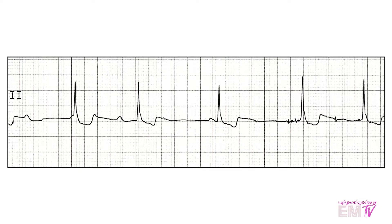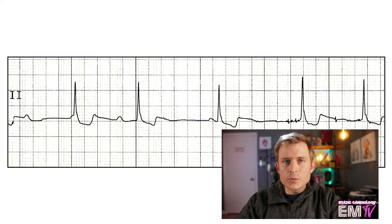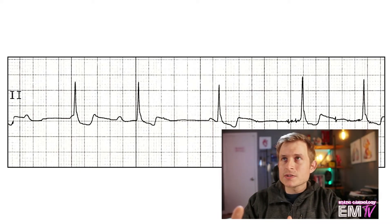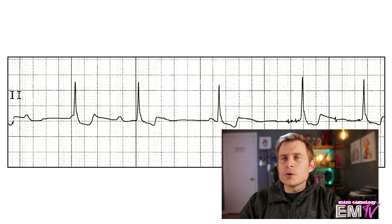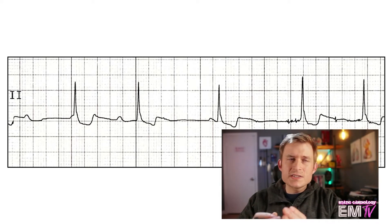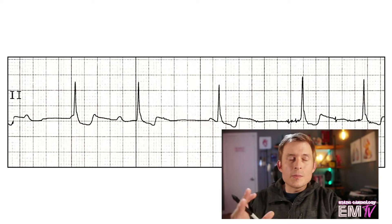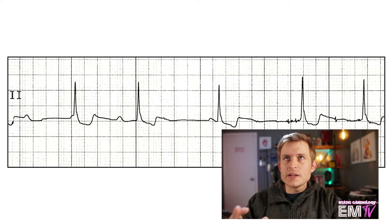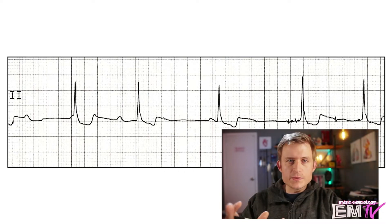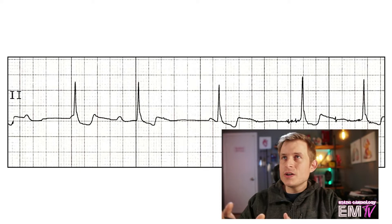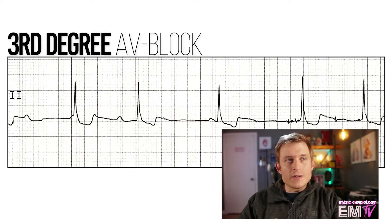So this rhythm looks very confusing. You have an inconsistent R to R interval, which would paint the picture of a fibrillation. You have a narrow QRS complex, and then you've got these P waves that are just kind of superimposed wherever they want. But because I still am seeing P waves, I'm going to lean away from saying it's atrial fibrillation and actually more toward a block. Because of this inconsistent PR interval and the fact that there doesn't seem to be any real semblance of association between your P waves and your QRS complexes, this really only means it's one thing. My diagnosis here is actually going to be a third degree AV block.